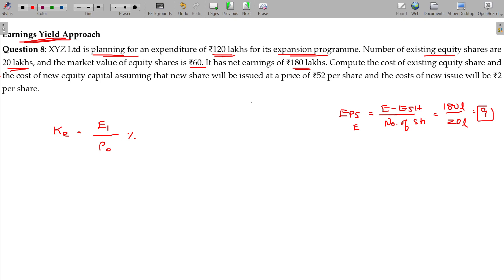Market value of the share being 60. So, the market value approach: 9 rupees is your earnings per share with the market value per share being 60. If you represent the KE in terms of percentage, it is 15.